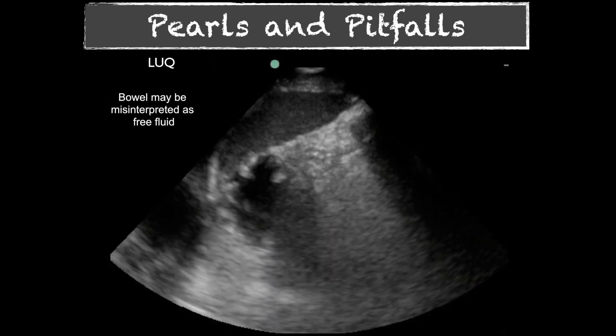In the left upper quadrant, bowel has also been mistaken for free fluid. A clue is that bowel looks fairly contained and you can see the hyperechoic inner bowel walls. Free fluid conforms to spaces and doesn't create its own shape — it would surround the spleen rather than forming a distinct rounded space. Newer users often mistake distended bowel for free fluid in the left upper quadrant, since the spleen is smaller and bowel is more commonly adjacent.